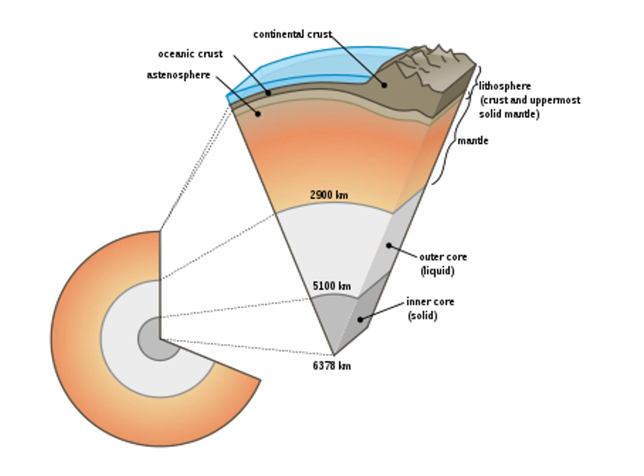The inner core is solid and the outer core is liquid. The temperature is really high here and it extends to about 6,000 kilometers depth. It is basically made up of NiFe — nickel and iron.